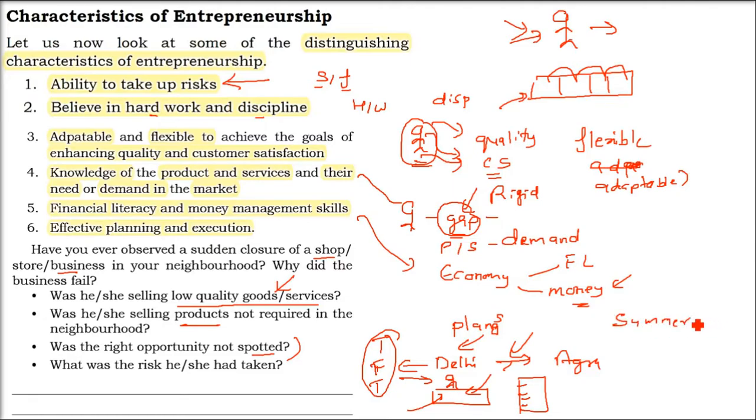For example, in the Indian subcontinent in summer, if you start selling sweaters or warm clothes - some people will buy but people won't be interested. It's summer.